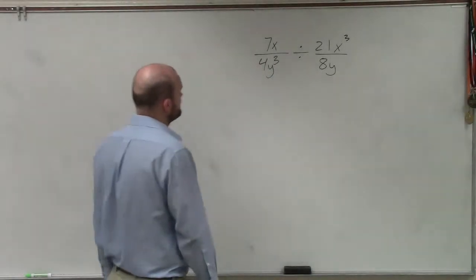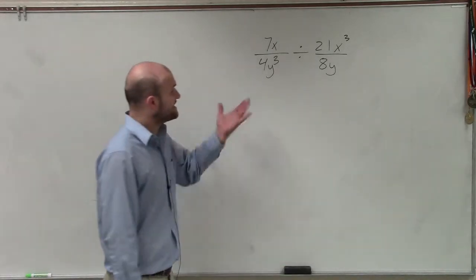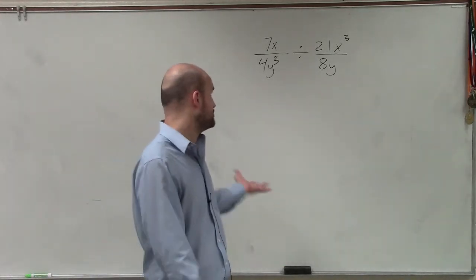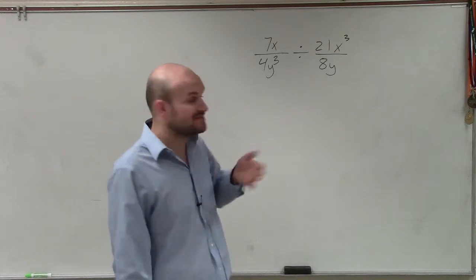Welcome. All right, in this case, what we have is 7x divided by 4y cubed, divided by 21x cubed divided by 8y.